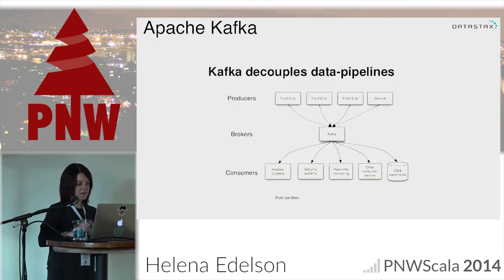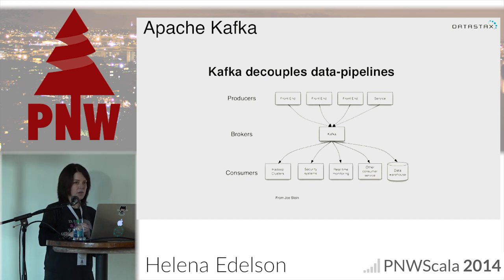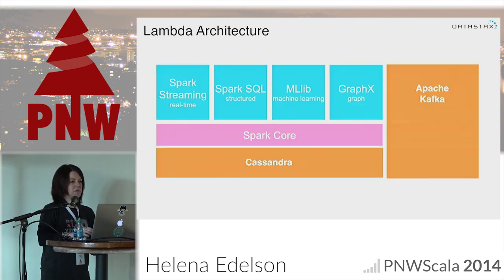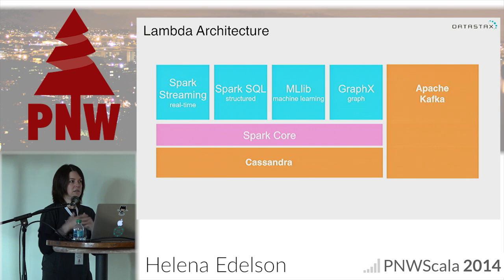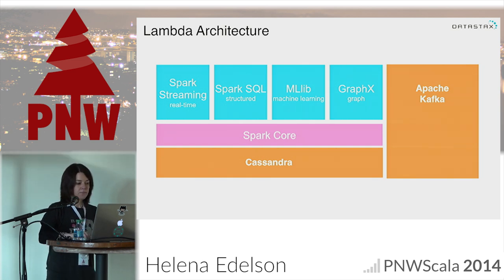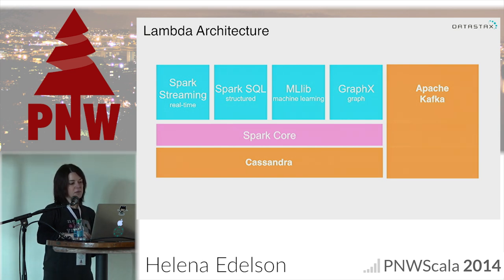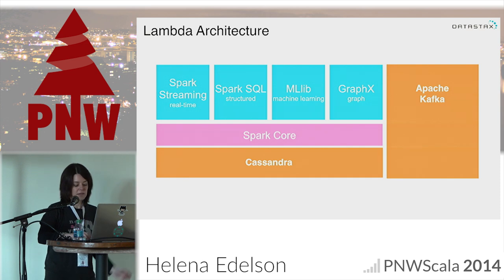One slide on Apache Kafka: it's a high-throughput distributed messaging system. We're primarily going to look at Kafka in the code for integration with all these systems. Thinking about Lambda architecture, all of these technologies together give us a sense of what we can actually develop with and deploy — Spark components built on Cassandra with Apache Kafka — and using Scala and Akka makes it all very nice.